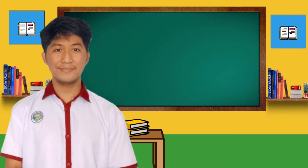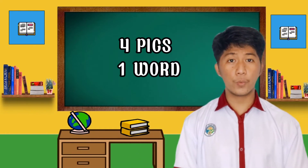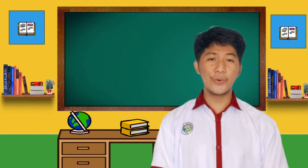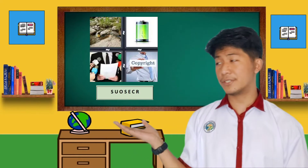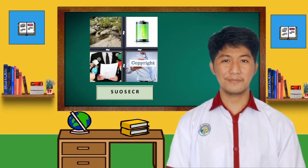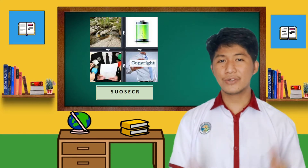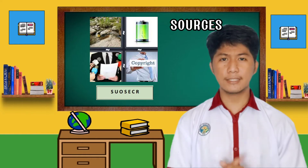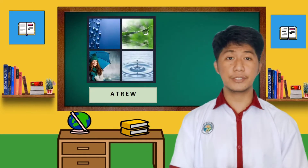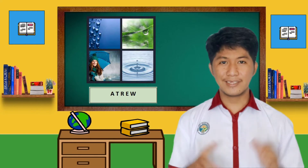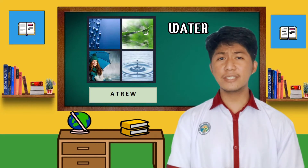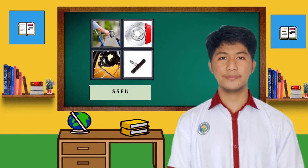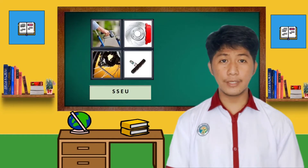Very good! And now, we will play a game. Are you familiar with the game 4 pics 1 word? Today, we are going to play that game. I have here 4 pictures that serve as a clue to guess the scrambled words. Here is the first picture — nice job! The scrambled word is 'sources.' And how about the second picture? Very good! It is 'water.' And the last picture? Alright, the scrambled word is 'uses.'